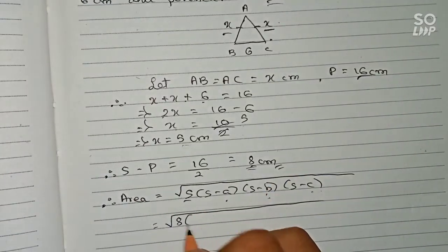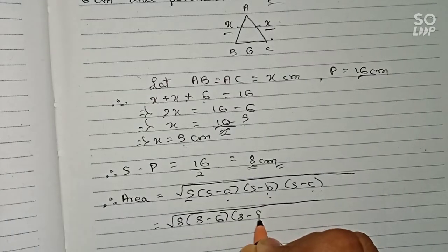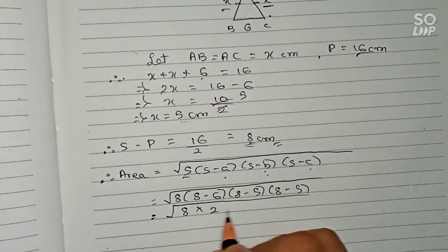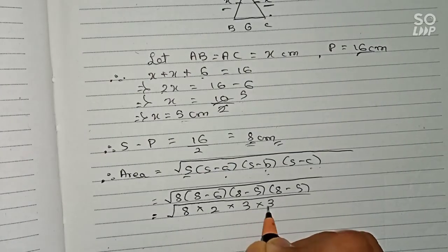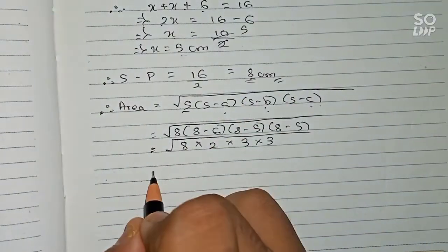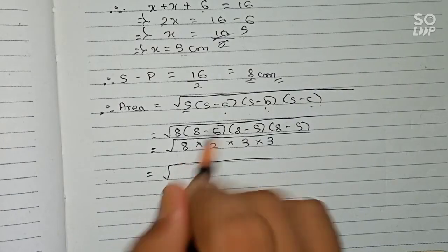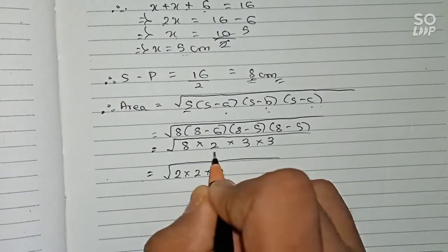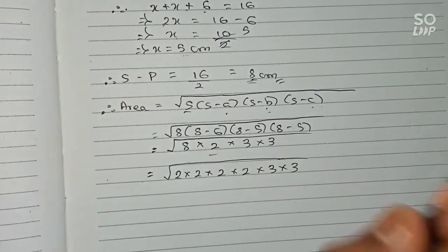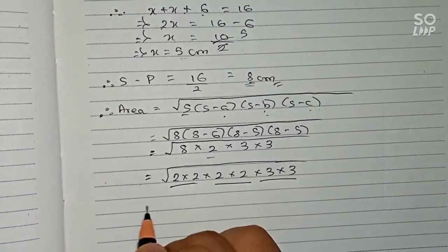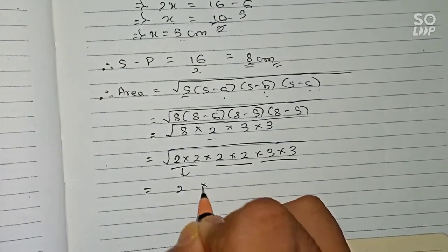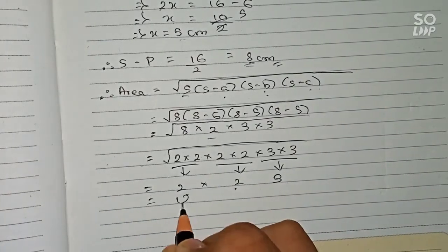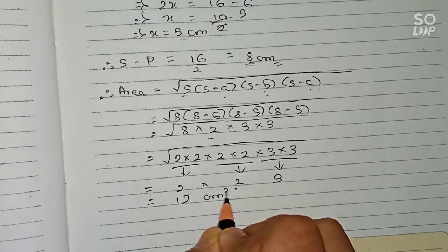Substituting the values: 8 minus 6 equals 2, 8 minus 5 equals 3, and again 8 minus 5 equals 3. So the area equals the square root of 8 times 2 times 3 times 3. Breaking it down: 8 equals 2 times 2 times 2, giving us 2 times 2 times 2 times 2 times 3 times 3. Taking pairs out of the square root gives 2 times 2 times 3, which equals 12. So the area equals 12 centimeters squared.